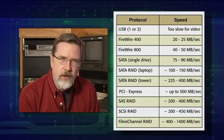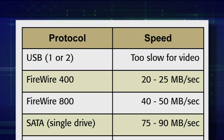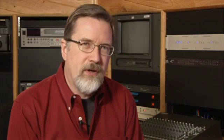Which one should you use and why should you care? USB is a perfectly okay way of connecting a hard disk to your computer, but it's not okay for video editing — it's too slow. On the Macintosh, USB has been optimized for wireless devices like keyboards, mice, and scanners. It doesn't give us the throughput we need to reliably edit video. A much better way is FireWire 400. According to the spec, we should get 50 megabytes a second, but in practice a FireWire 400 drive gives us about 20 to 25 megabytes a second.